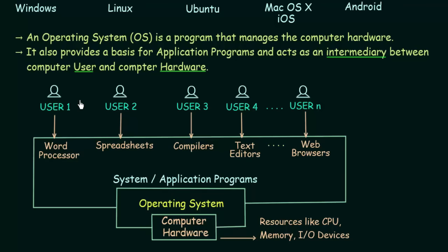On top of the application programs we have the users - people like you and me who use these software for performing specific tasks. Let us take a simple example: User 1 wants to use the word processor, say Microsoft Office Word, to type some documents and save them. Let us imagine there is no operating system - just the user, application programs, and computer hardware.